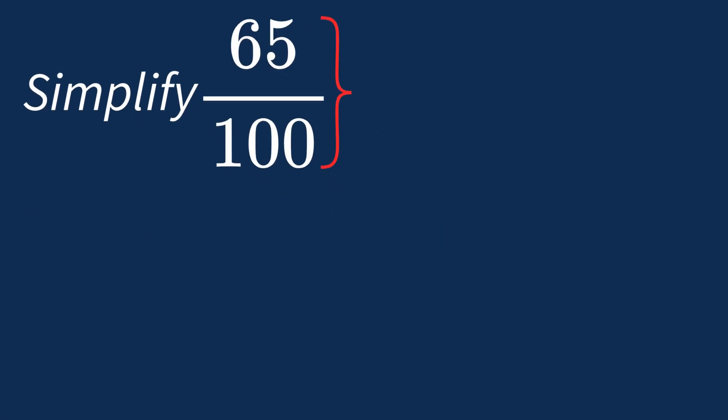To simplify 65 over 100, we need to look for the common factors between the top number, the numerator, and the bottom number, the denominator.